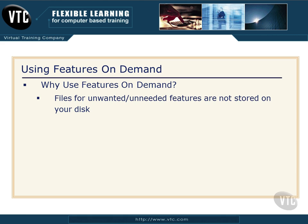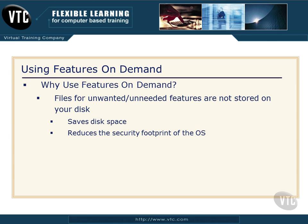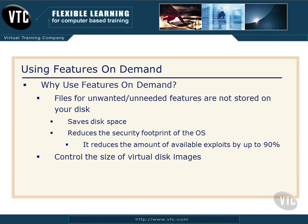Why do I want to use Features on Demand? The biggest reason is that files for unwanted or unneeded features are not even stored on your disk. Number one, this saves disk space. And probably the biggest reason, it reduces the security footprint of the OS. There's less there for hackers to take advantage of and try to manipulate. It reduces, in some instances, the amount of available exploits by hackers and viruses up to 90%. That is huge. In the world of virtual images and that whole virtualization universe, you can really control the size of your virtual disk images. Features on Demand offers more control to administrators. It's a new feature, and it's getting a lot of attention. Expect to see this on the exam.